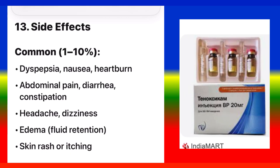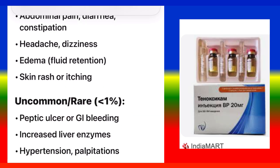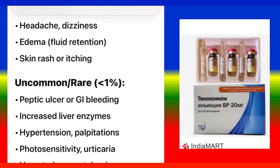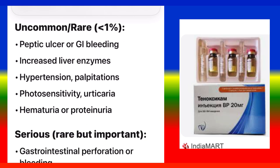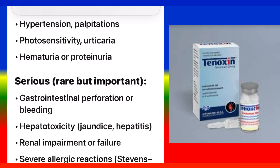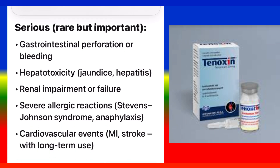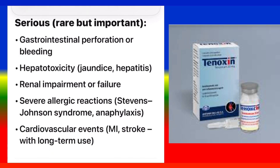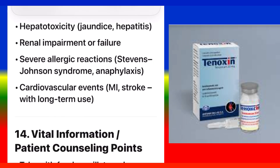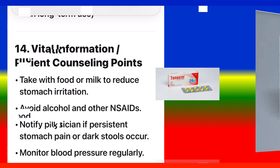Side Effects — Common (1–10%): dyspepsia, nausea, heartburn, abdominal pain, diarrhea, constipation, headache, dizziness, edema/fluid retention, skin rash or itching. Uncommon/rare (<1%): peptic ulcer or GI bleeding, increased liver enzymes, hypertension, palpitations, photosensitivity, urticaria, hematuria or proteinuria. Serious (rare but important): gastrointestinal perforation or bleeding, hepatotoxicity (jaundice, hepatitis), renal impairment or failure, severe allergic reactions (Stevens-Johnson syndrome, anaphylaxis), and cardiovascular events (MI, stroke) with long-term use.